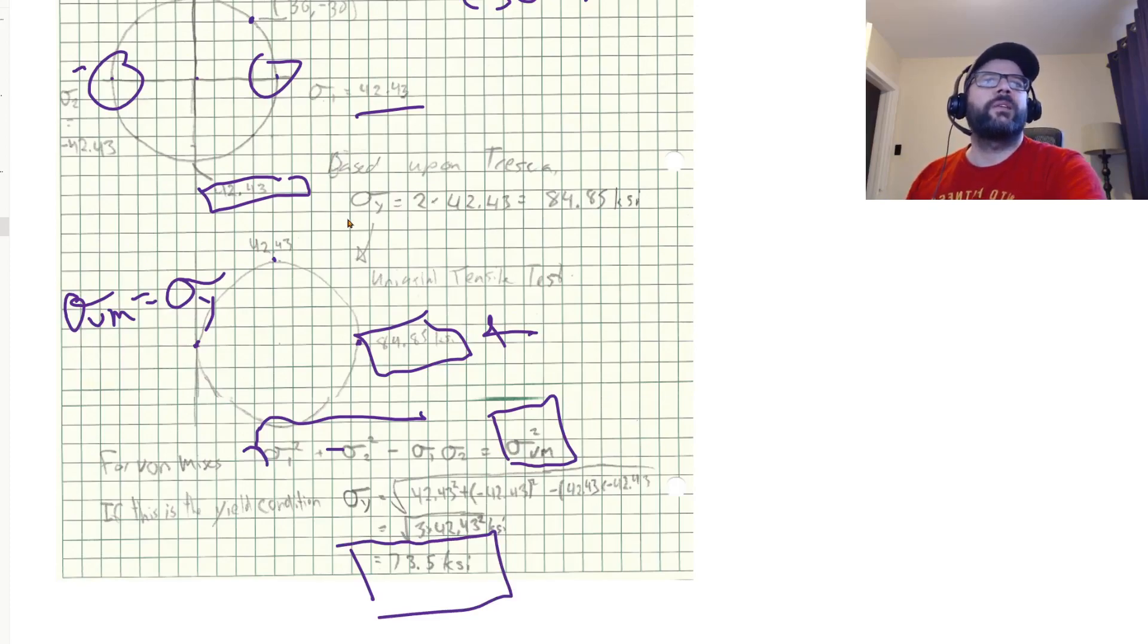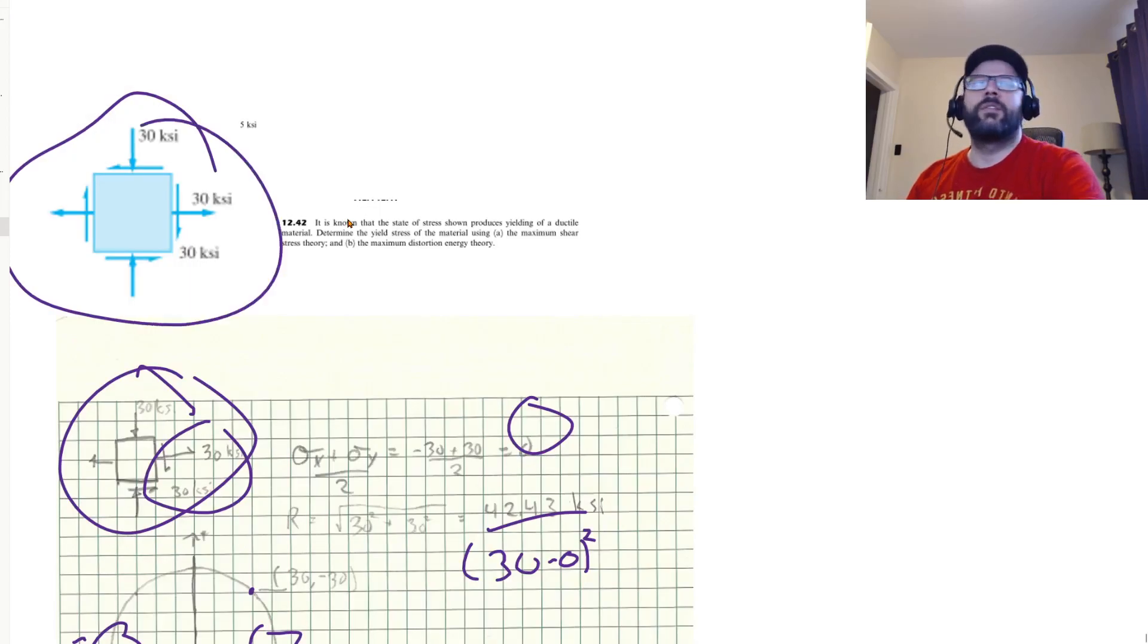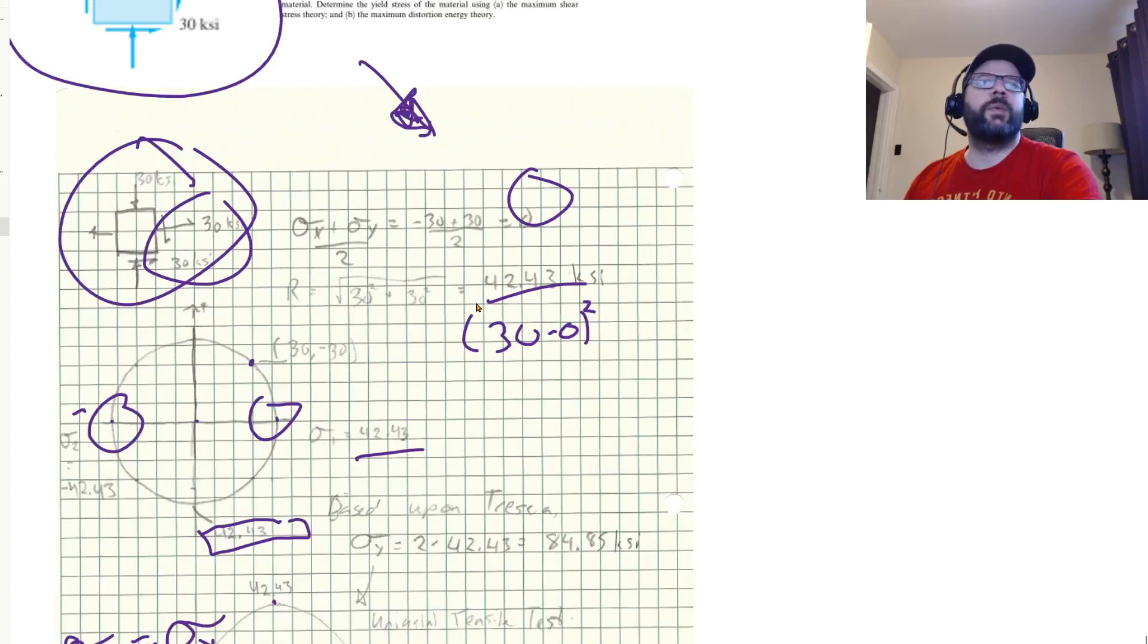So that's how we go from knowing our stress state to knowing what the equivalent Von Mises stresses are and what the equivalent Tresca stress is, basically.